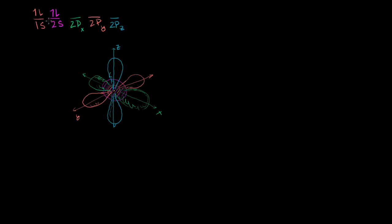When you keep adding electrons — so far we've added four — if you add a fifth electron, you would expect it to go into the 2px orbital. Even though this 2px orbital can fit two electrons, the first one goes there, but the very next one won't go into that one. It actually wants to separate itself within the p orbital. So the next electron goes into 2py, and the one after that goes into 2pz — they try to separate themselves. Then if you add an eighth electron, it will go into the 2px orbital with the opposite spin.